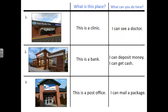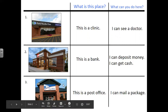Number one. What is this place? This is a clinic. What can you do here? I can see a doctor. Number two. What is this place? This is a bank. Number three. What is this place? This is a post office. What can you do here? I can mail a package.